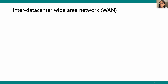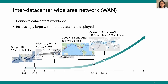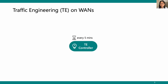What is a Wide Area Network? The inter-data center Wide Area Network is the network that connects data centers worldwide. It becomes increasingly large with more data centers, from a few sites to tens or hundreds of sites, and a future Wide Area Network is projected to have thousands of sites. On these Wide Area Networks, the traffic engineering system has been implemented.